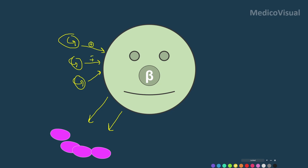the beta cell will secrete more and more insulin, even though it was already secreting insulin — but glucose is still high. So it will start secreting more insulin very quickly and hurriedly,